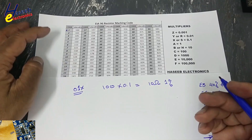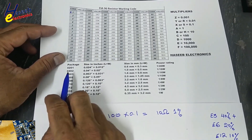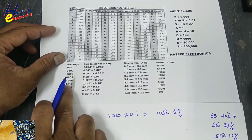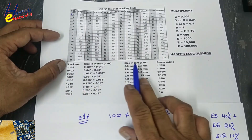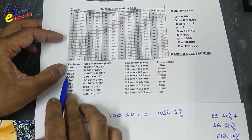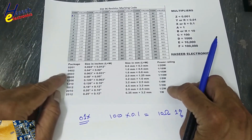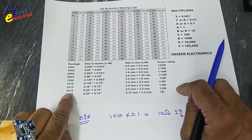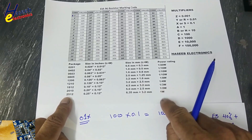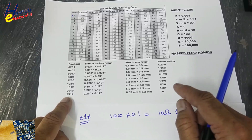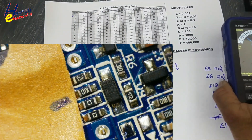If you want to check the power rating, use a vernier caliper to measure the length and width in inches or millimeters. You will then find the package code and from there the power rating. For example, package 2010 is a half-watt resistor, and 2512 is a one-watt resistor — depending on the datasheet.